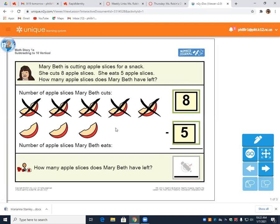So she's had eight. She cuts, well, she sliced eight and then she ate five. So she started with eight and she took five away. How many does she have left? Three. Very good. Thank you. And we see that here. One, two, three.